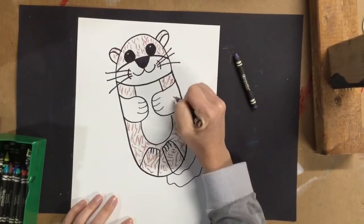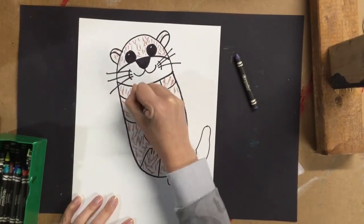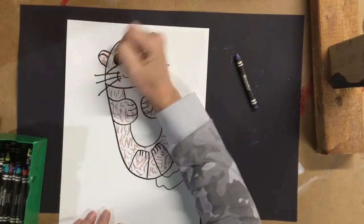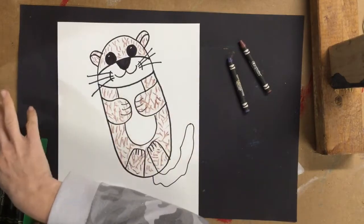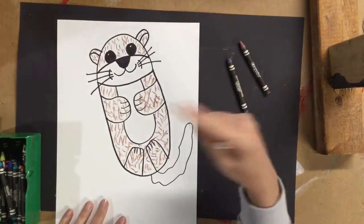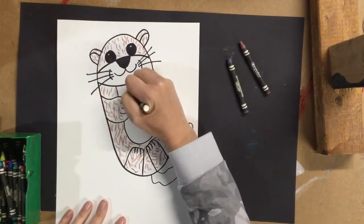Now, remember, lots of dashes. And here, we're going to do that same technique, but with white. That way, when we put the watercolor paint on top of it, you'll see the white marks through.